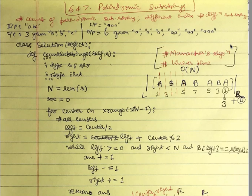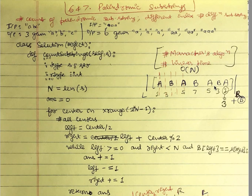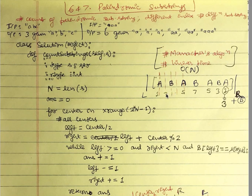Here is our class solution where we have a function countSubstrings that takes string S as input. N is the length of the string and answer is initialized to 0. We iterate through the entire string using a center variable ranging over 2*N - 1 to account for all possible substrings. For example in the string 'ABABAB', we check the palindrome using A as center, B as center, and also the midpoint between A and B as a center.